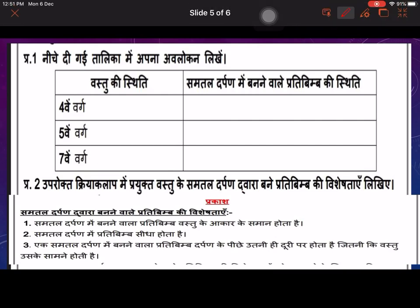If you keep the object in the 4th square then the image will also be made in the 4th square behind the mirror. 5th square image will be in the 5th, and 7th will be in the 7th.